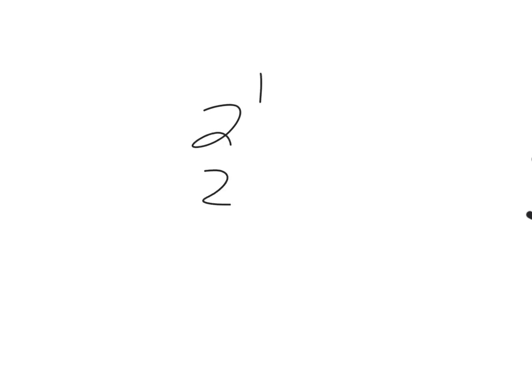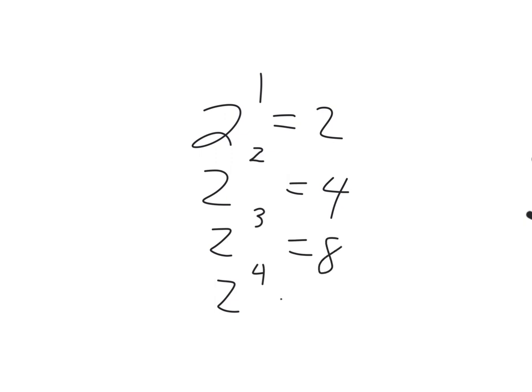We go fairly far with the 2s — you have to be able to go all the way to 2 to the 4th. 2 to the 1st is 2. 2 to the 2nd is 4. 2 to the 3rd is 8. And 2 to the 4th is 16. You've got to know that one.